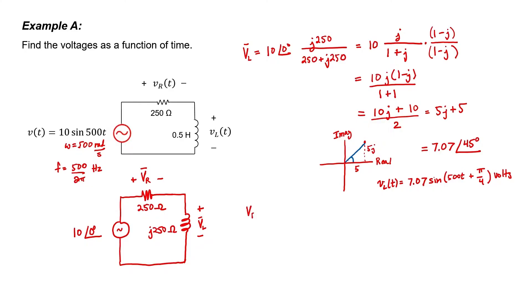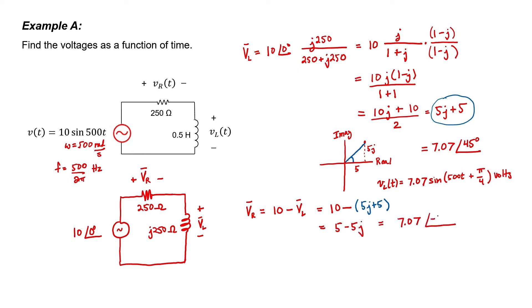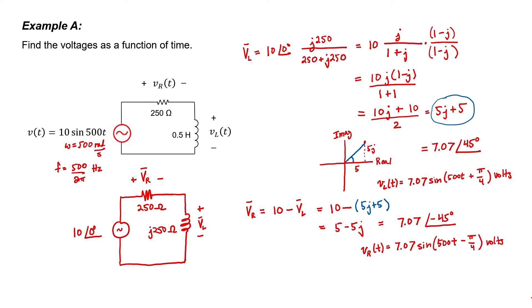Looking back at the circuit diagram, we can see that the voltage across the resistor is just the voltage at the source minus the voltage across the inductor. The magnitude is the same, but the phase is now negative. We now have both the resistor and inductor voltage as a function of time. Let's go on to the next example.